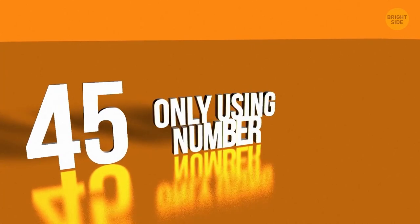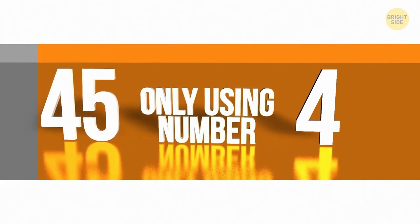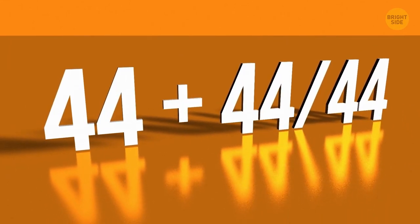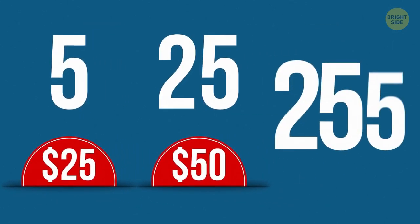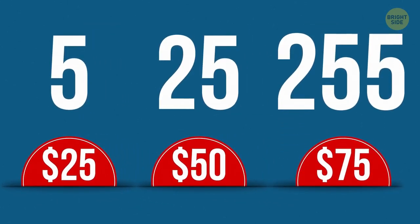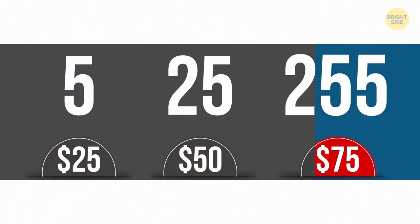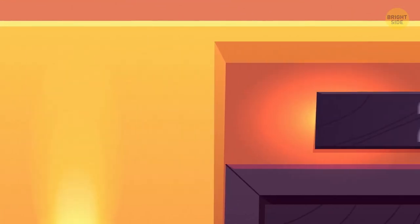17. How can you write number 45 only using number 4? 44 plus 44 divided by 44. 18. Five costs $25, and 25 costs $50. If you buy 250, you'll pay $75. What is it, and how much does one item cost? They're door numbers, and one number costs $25 each. Ooh, that's expensive.